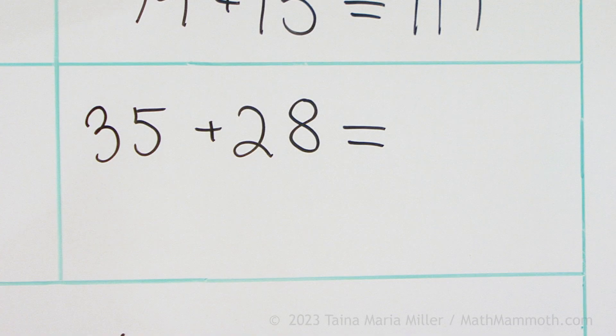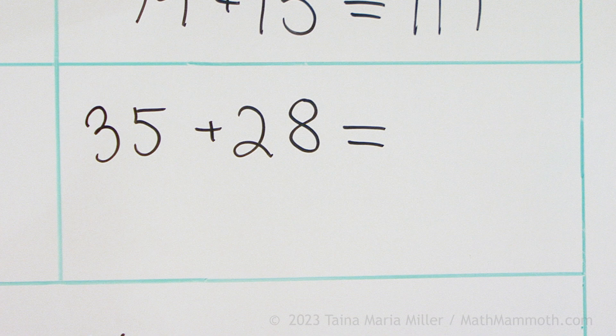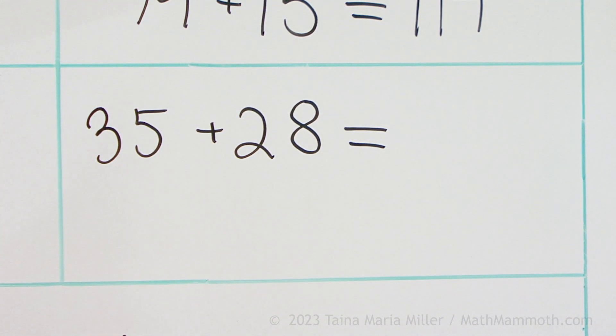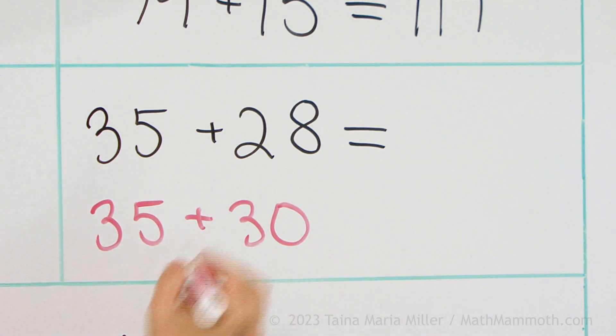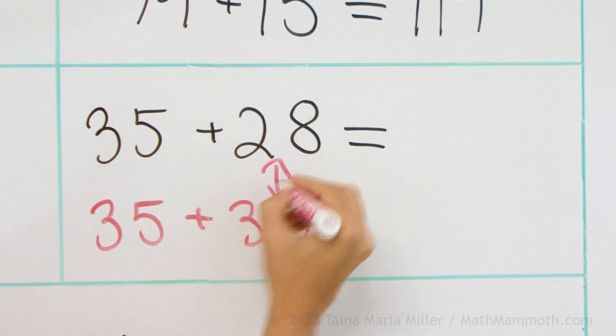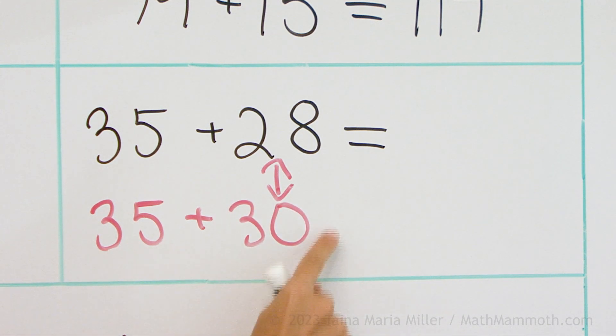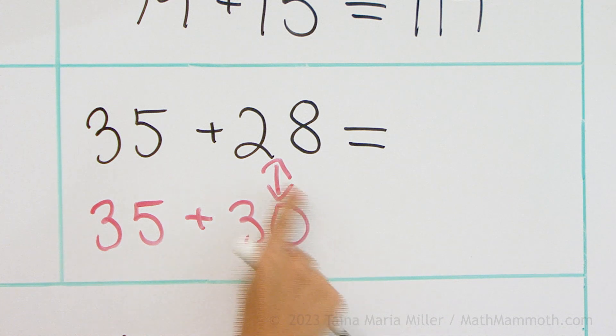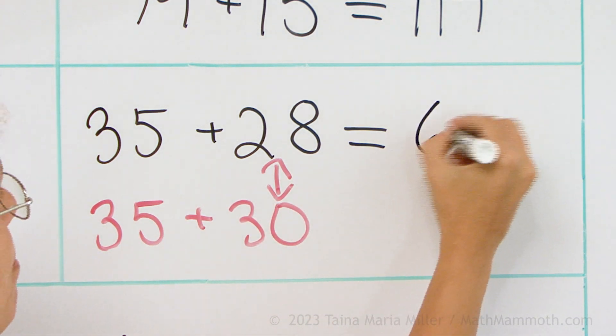How about this one, want to try it on your own? The helping problem is this. I mean this is one way to think about it. Of course there are many ways to add mentally. But if you use this as your helping problem and compare this 28 and this 30. This is 65. It's two more than that, so this must be two less than 65, that's 63.